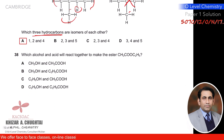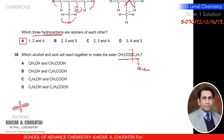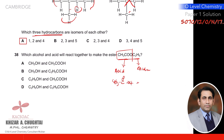Question thirty-eight: which alcohol and acid react together to make ethyl ethanoate? The alcohol portion gives ethanol and the acid portion (containing both oxygen atoms) gives ethanoic acid. So the correct option is ethanoic acid and ethanol — C is the correct option.